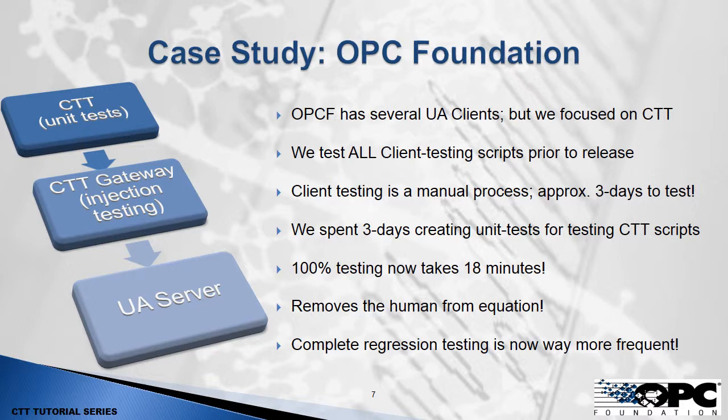For example, if I use an injection script that says a read failed with a bad not supported error, then I can create a unit test where I do a read and when I get the response, I look for the response to say bad not supported. So we spent three days creating those unit test scripts, which is the same amount of time it took to actually test those scripts manually. Once it was all said and done, we could then run our automation script and it took about 17 to 18 minutes to do every single script — 100% of them — versus three days for a person.